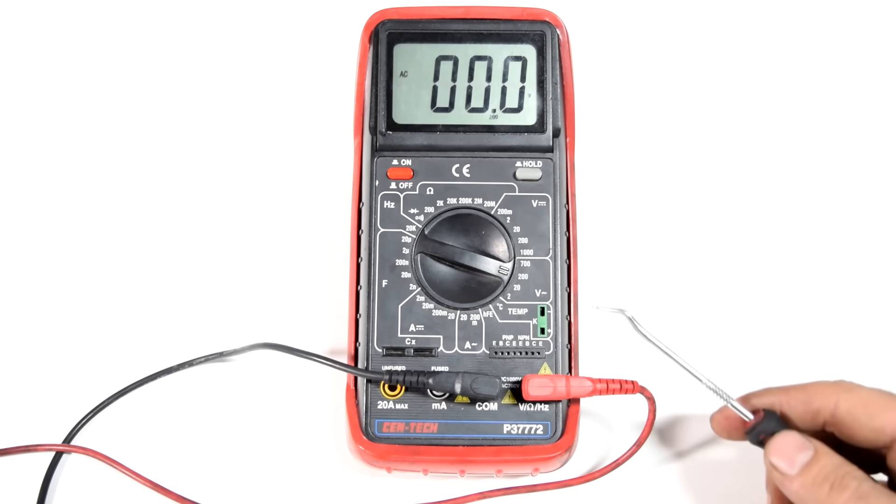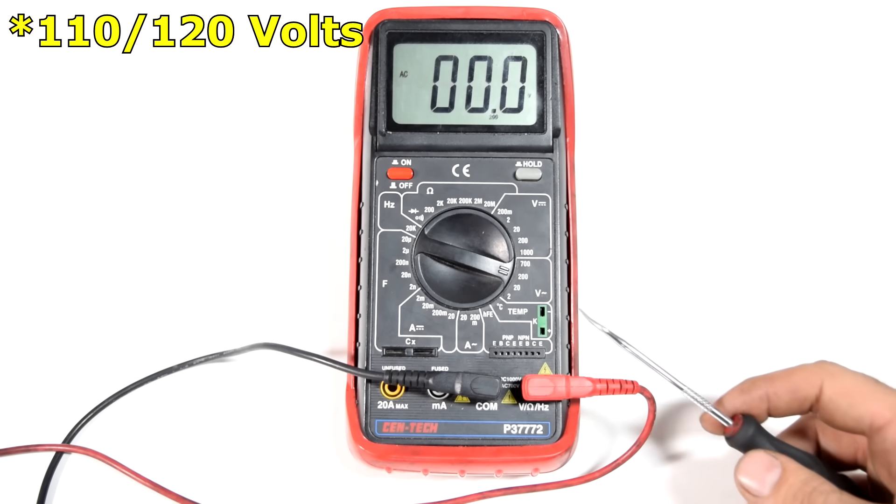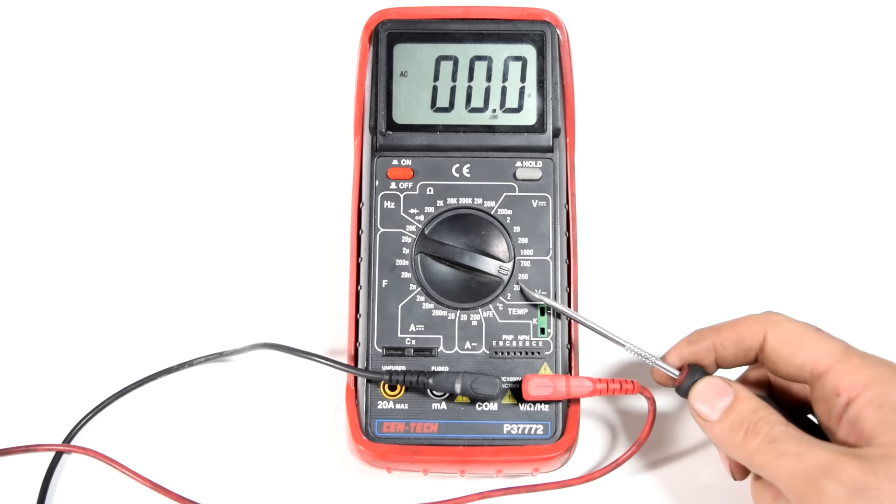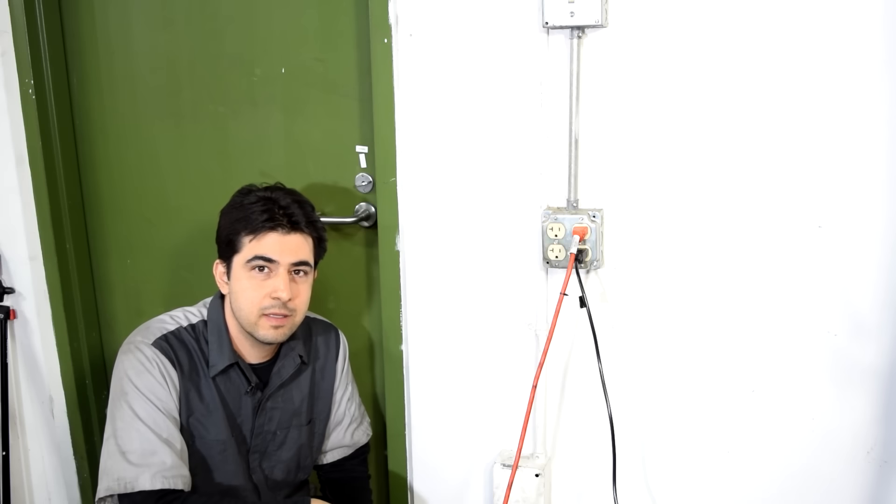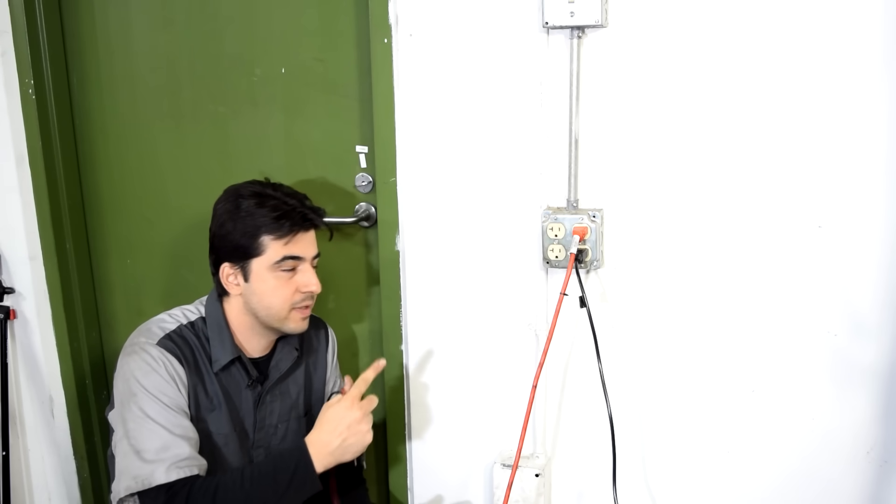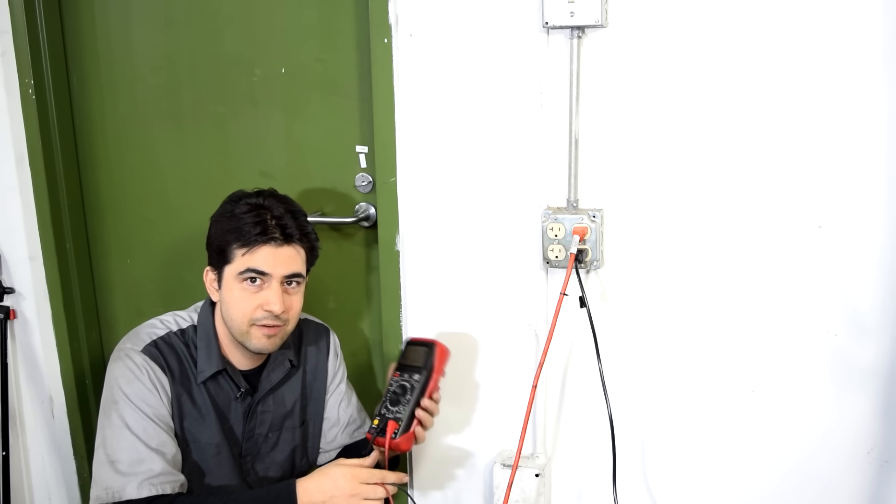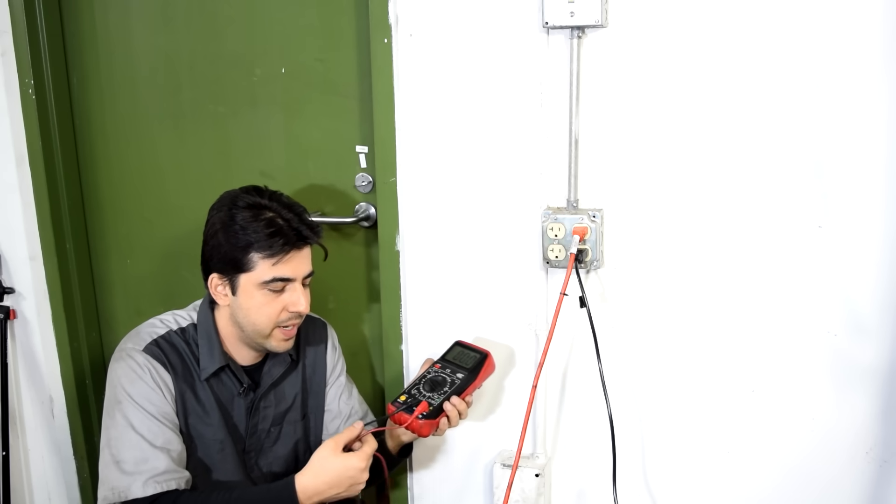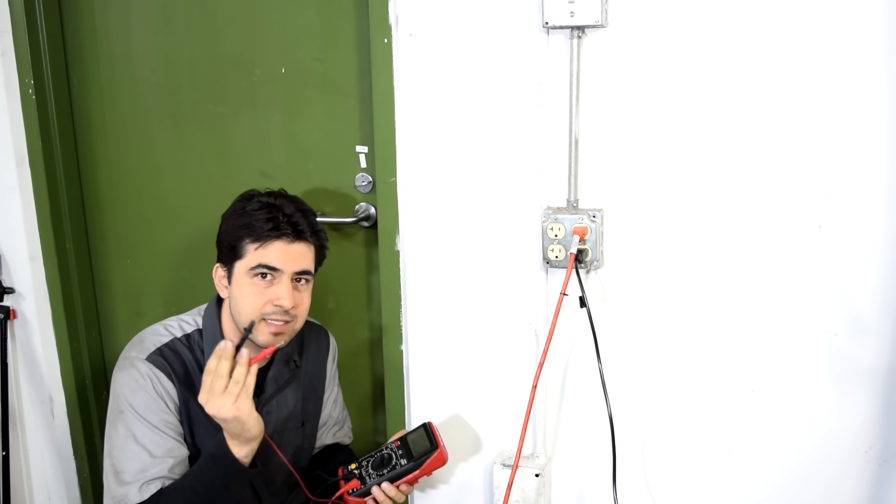So next we're going to see whether we have current at a wall socket or not. And since we get about 110 volts here in the states, we're going to set our dial to 200 which is the next one up from the voltage we're expecting to measure. All right a word of caution, when measuring high voltage like this, you need to be 100% sure of the integrity of your multimeter plus the wires that go to your test leads and the test leads themselves.